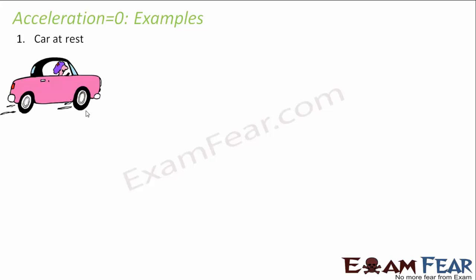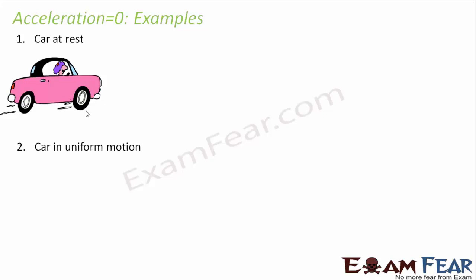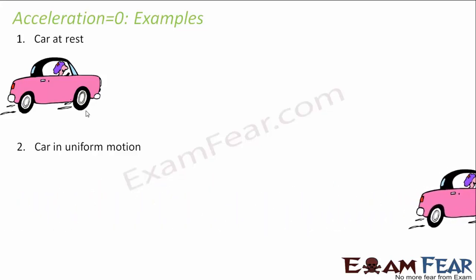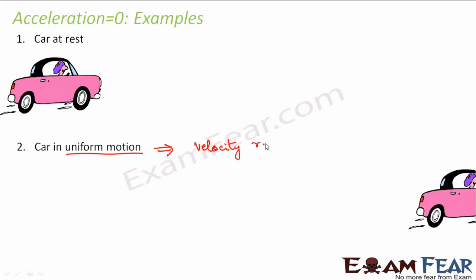There are two scenarios when acceleration is zero. First, when the car is at rest: no movement means no change in position, so displacement is zero, velocity is zero, and therefore acceleration is zero. Second, when the car is in uniform motion — meaning it covers equal distances in equal intervals of time — the velocity remains constant.